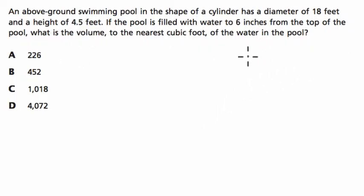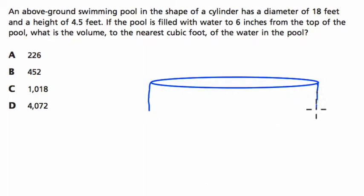An above-ground swimming pool in the shape of a cylinder has a diameter of 18 feet and a height of 4.5 feet. So I'm going to sketch this out. Wide pool, not too deep of course for the kids. Alright, so here's our pool.